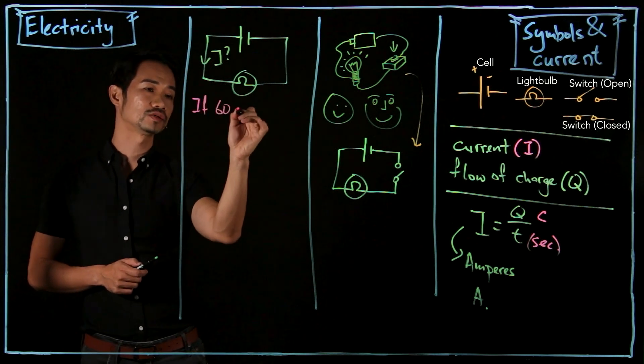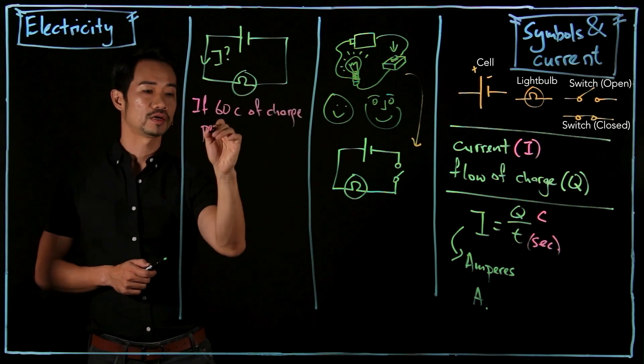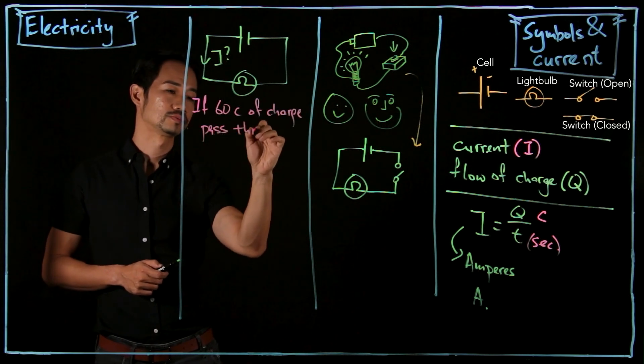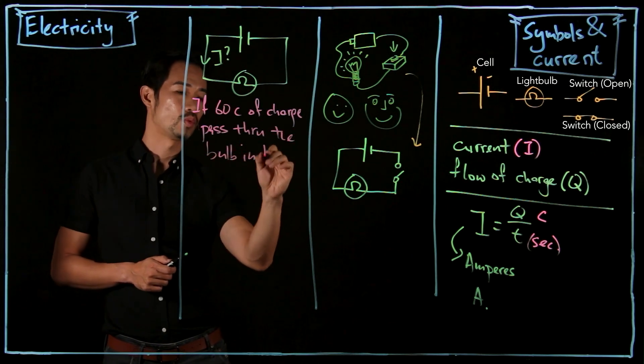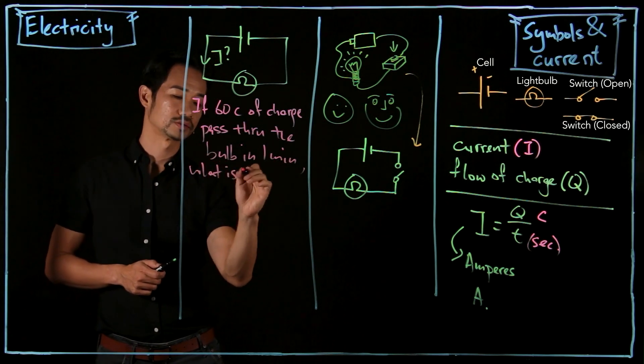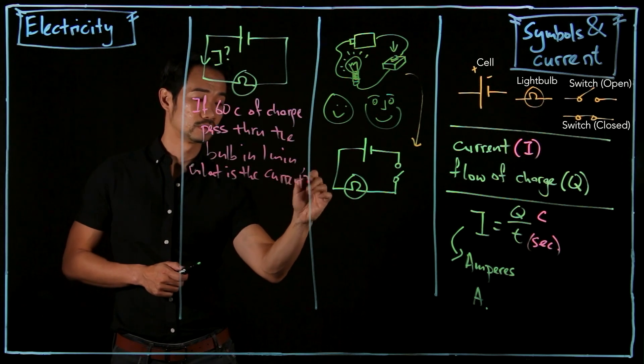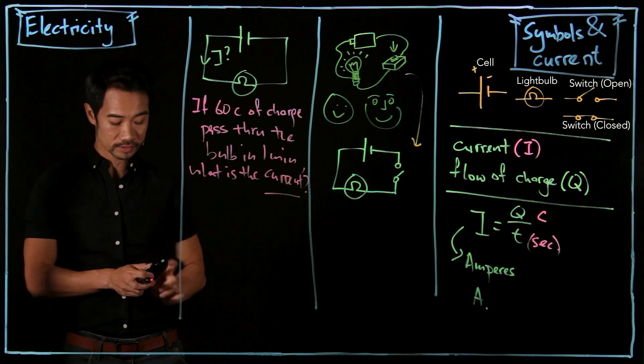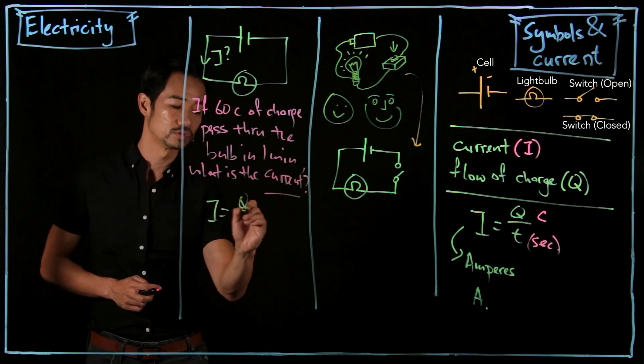if 60 Coulombs of charge pass through the bulb in one minute, what is the current? So in this case, we apply the formula. So I is equal to Q over T. Current I is what we want to find. So we leave it as I.